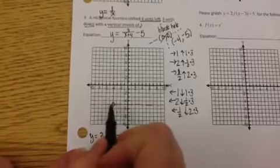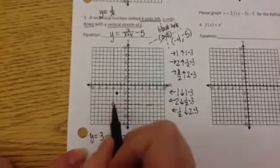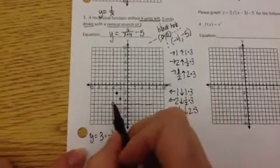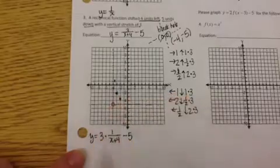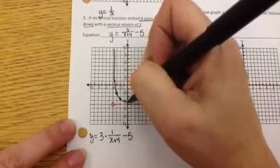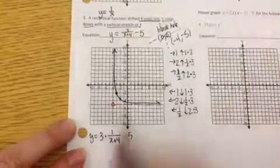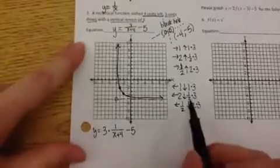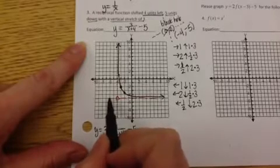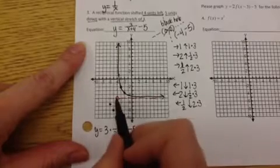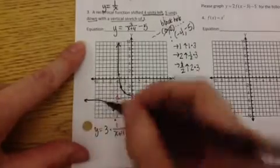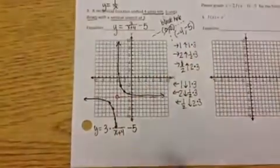From my black hole I move over 1 up 3, over 2 up 3 halves, over 1 half up 6. The graph runs along the asymptote through those 3 points and turns to run along the other asymptote — that's one branch. Then on the other side: left 1 down 3, left 2 down 1 and 1 half, left 1 half down 6. Draw the same picture running along both asymptotes.